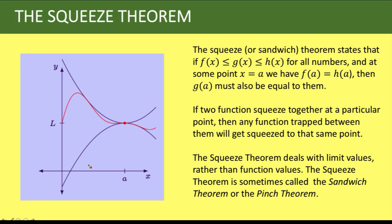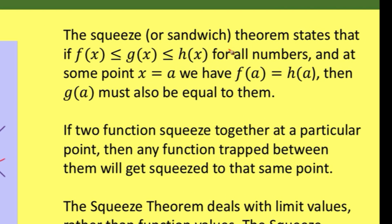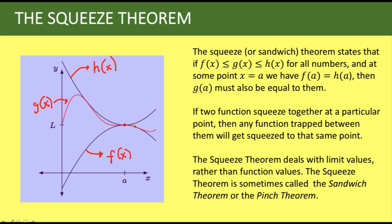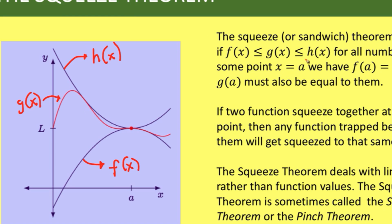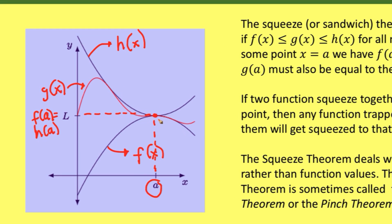To illustrate the squeeze theorem, let's say we have three functions. The curve at the bottom is our f of x, the blue graph at the top is our h of x, and the red curve in between is our g of x. The squeeze theorem, also called the sandwich theorem, states that if f of x is less than or equal to g of x, and less than or equal to h of x, for all numbers, and at some point x equals a, then f of a equals h of a — because at this point h of a and f of a are the same; they intersect.